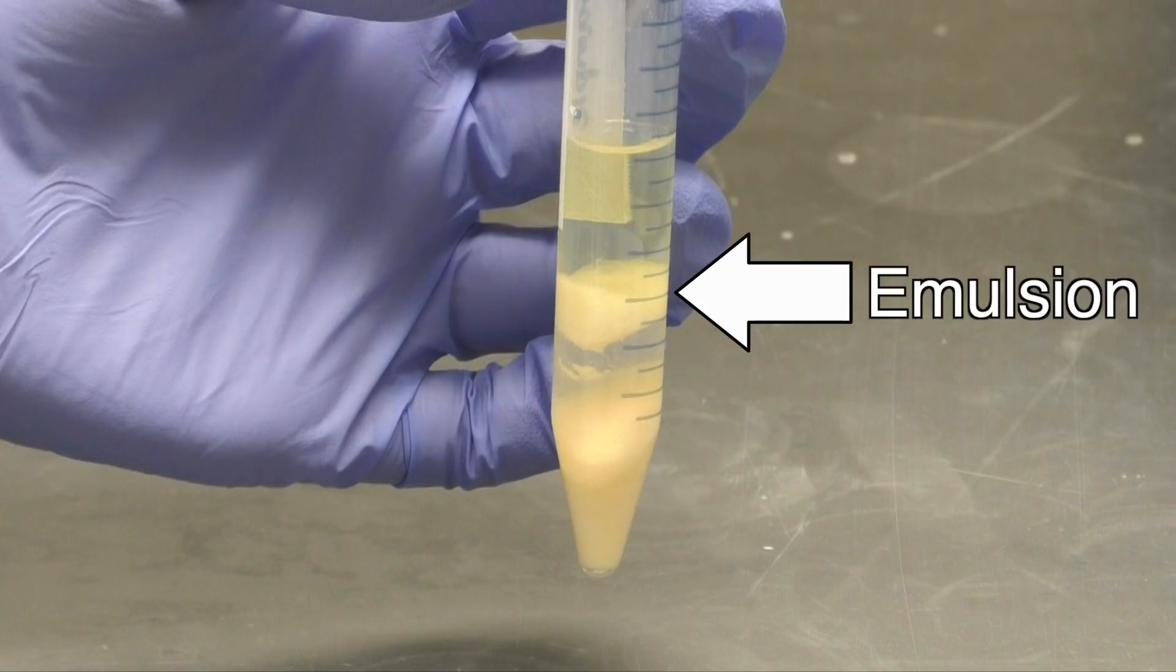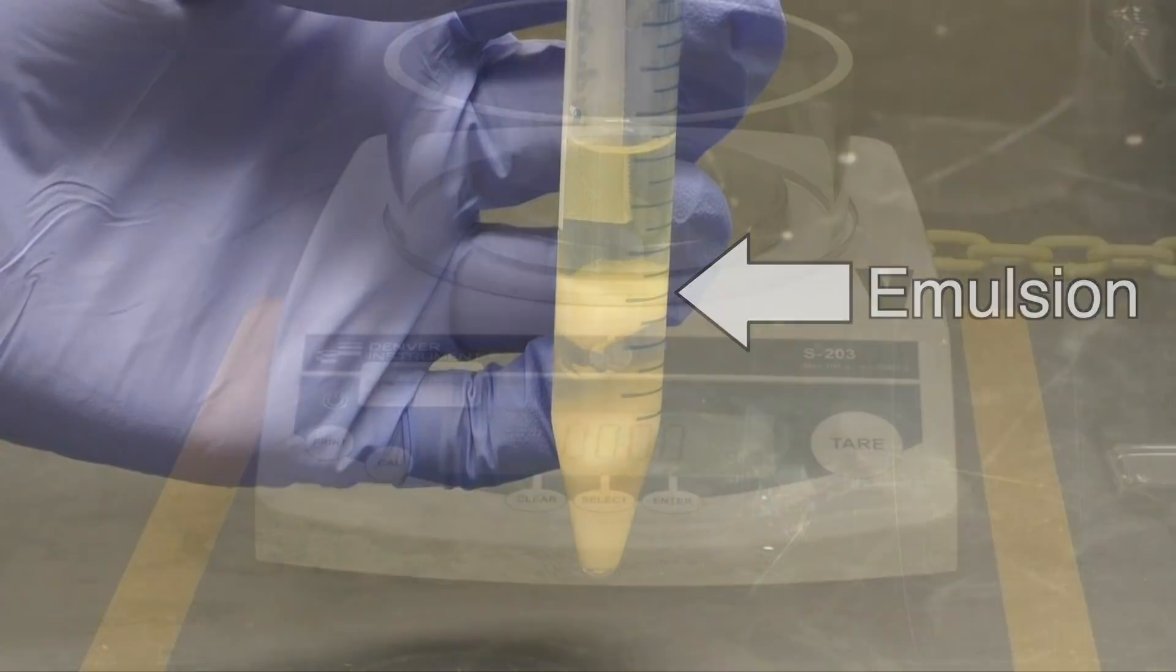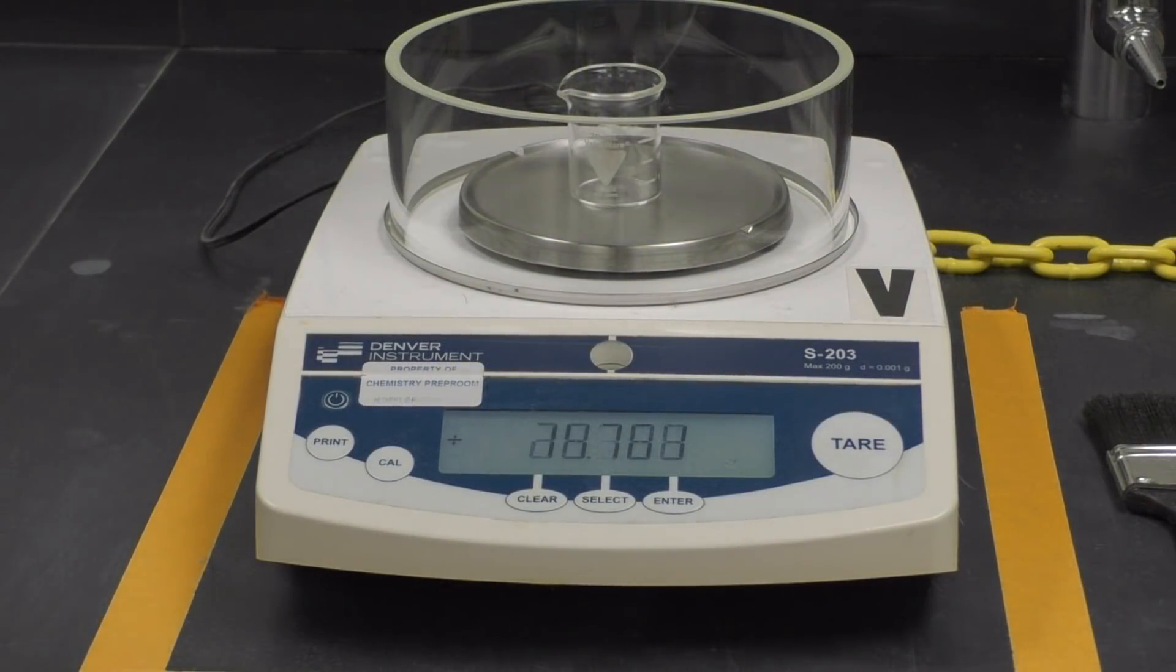To isolate the lipids, we will have to transfer one of the liquid layers to a beaker and evaporate the solvent we used. First, pick out a 20 milliliter beaker and weigh it on the balance. Be sure to write this mass down for later use.